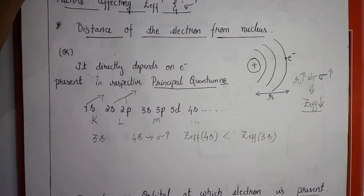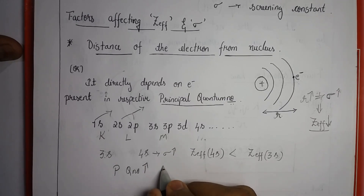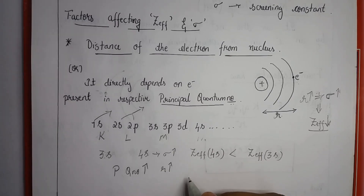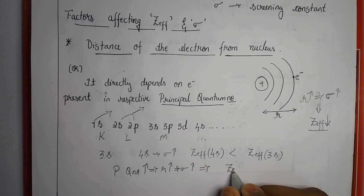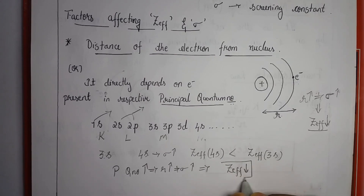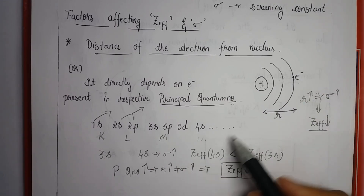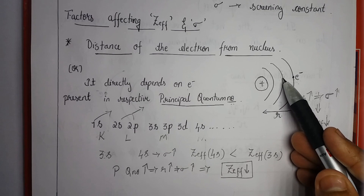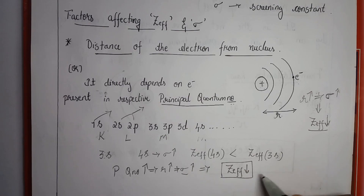In summary, as the principal quantum number increases, the distance of the electron from the nucleus also increases, resulting in more inner lying orbital electrons and more shielding. Hence sigma increases, and effective nuclear charge decreases.